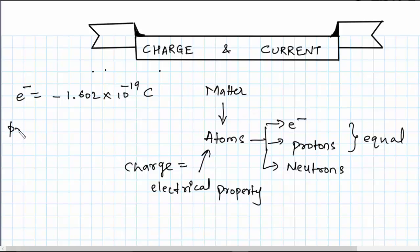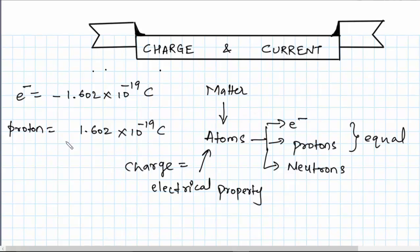Similarly, a proton will have a charge of the same magnitude — 1.602 × 10⁻¹⁹ coulombs — and the sign of the charge on a proton is taken as positive. Since electrons and protons are equal in number, the atom is electrically neutral.